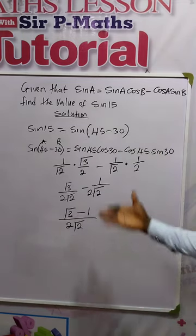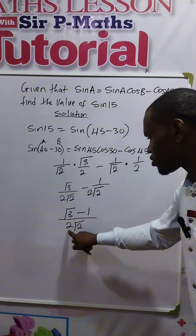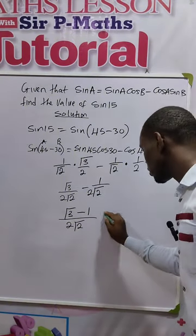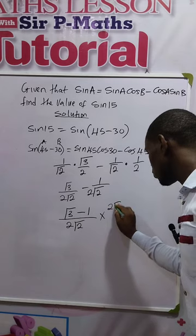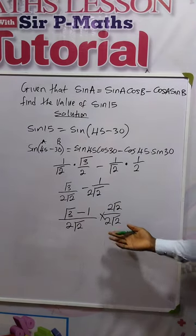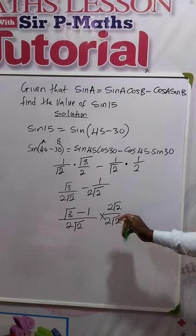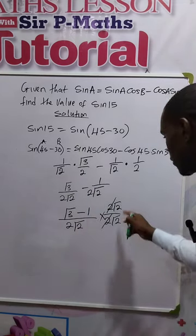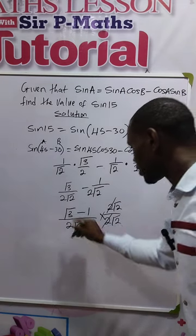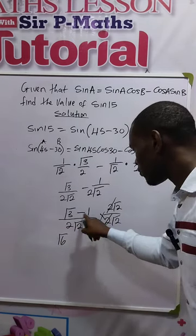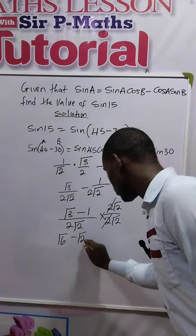So let's simplify further by rationalizing. We are going to be using 2 root 2 to multiply the numerator and denominator, right? So we say times 2 root 2 over 2 root 2. Or we can equally use just root 2, because 2 can divide 2 here. So let's multiply. Root 2 times root 3, that will give us root 6. Then root 2 times negative 1 will give us negative root 2.